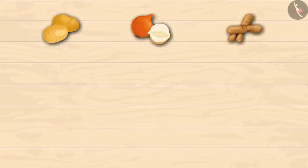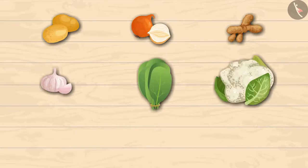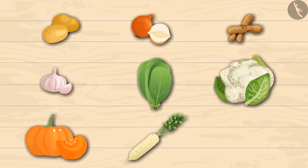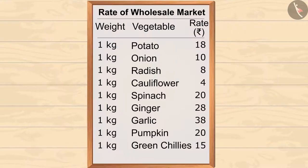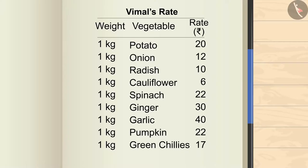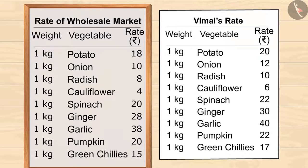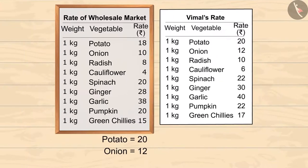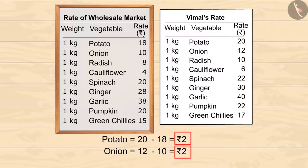Today he bought potatoes, onions, ginger, garlic, spinach, cauliflower, pumpkin, radish, and green chilies. You can see their prices according to the wholesale market. After returning home, Vimal prepared a list. Kids, can you tell the difference between the two lists? Vimal has increased the prices of all the vegetables by two rupees — this extra money is Vimal's daily earnings.